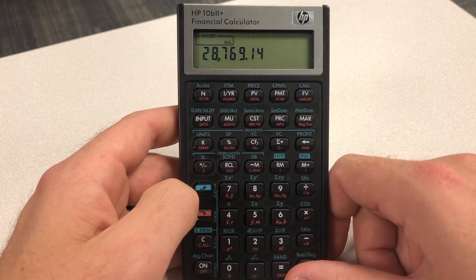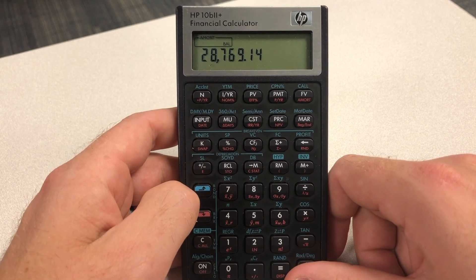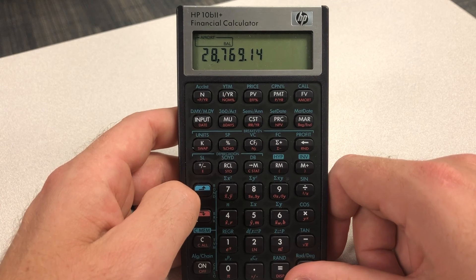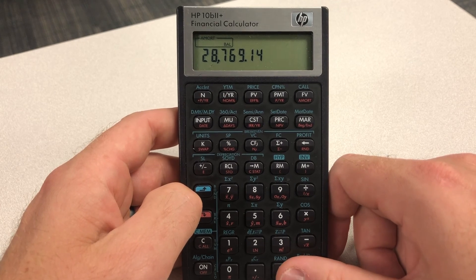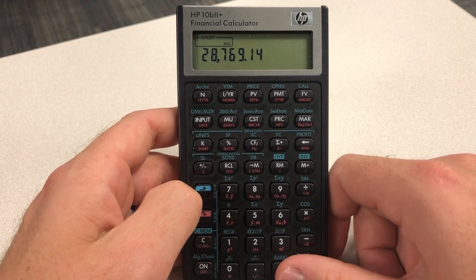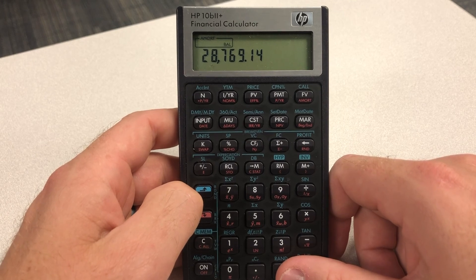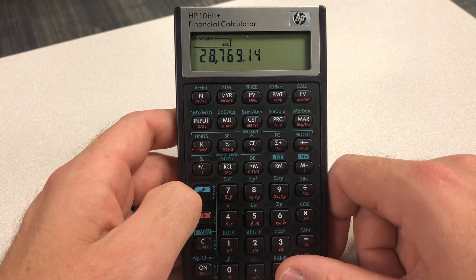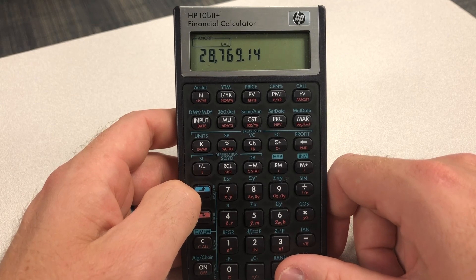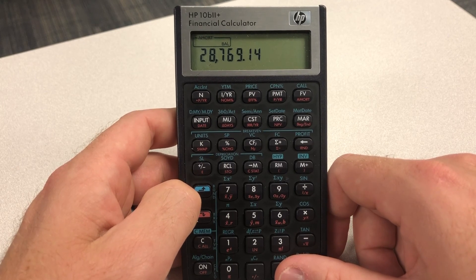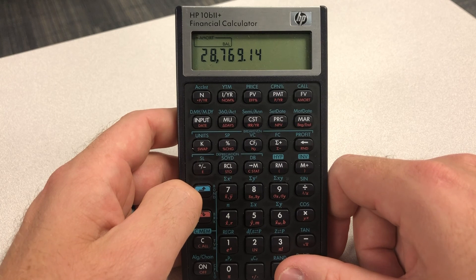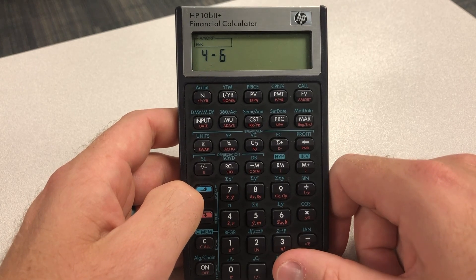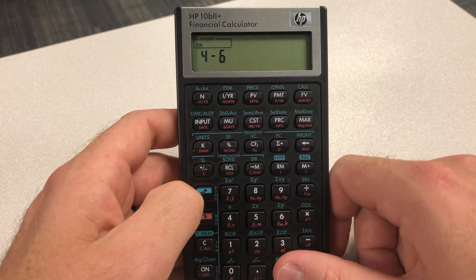So even though we're not, so let me clarify that. The principal and interest are only accounting for years four through six. But the balance is accounting for all the payments from period one till six, if that makes sense. Okay. Because that's the balance that we have there. Okay. So that is how we use and manipulate our amortization schedules on an HP10B2+.